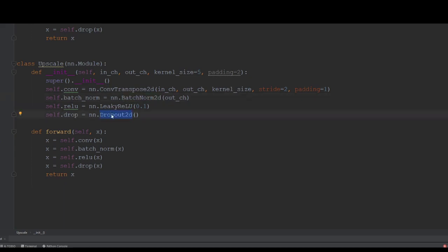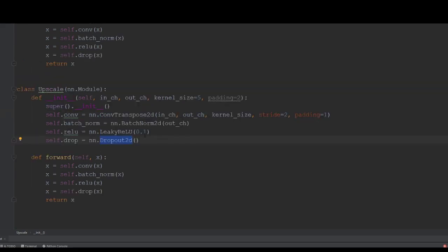So we're going to use a leaky relu in this case instead of regular relu because leaky relu work better with smaller data sizes. And the dropout is going to be used to help with normalization.